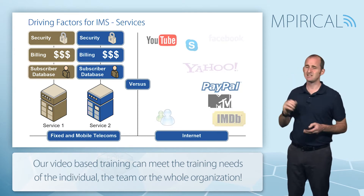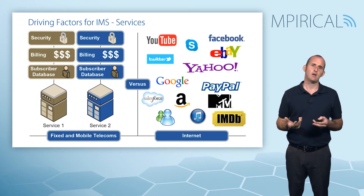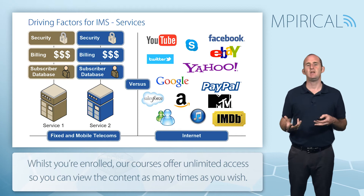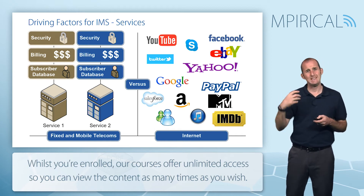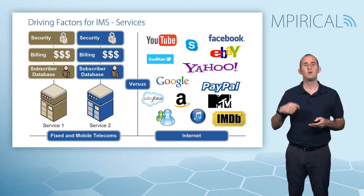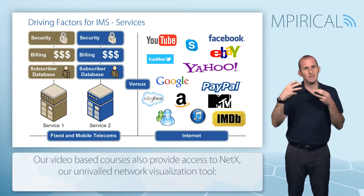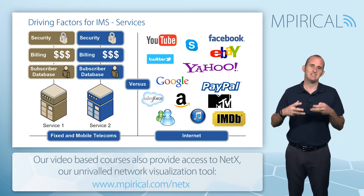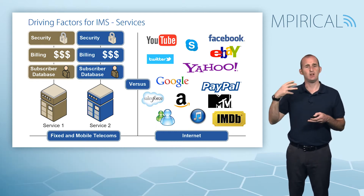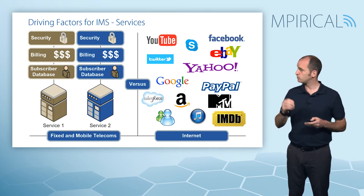Also, if you look at the internet and the way services are introduced there, it's a very open framework — anyone can come along and develop the latest killer application. So the 3GPP wanted an architecture whereby it was easier for service providers to introduce and implement new services without necessarily reworking lots of the existing databases, lots of the existing security mechanisms and such like. We wanted an easy architecture for introducing new services without repetition of existing features. That was one driver.